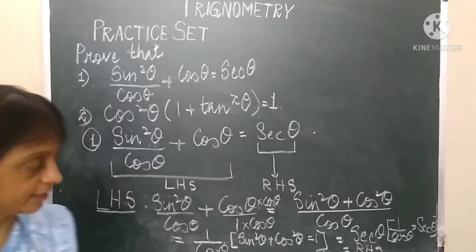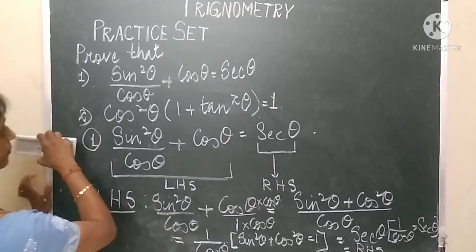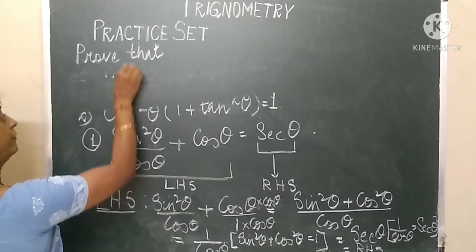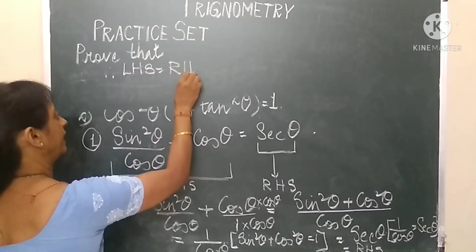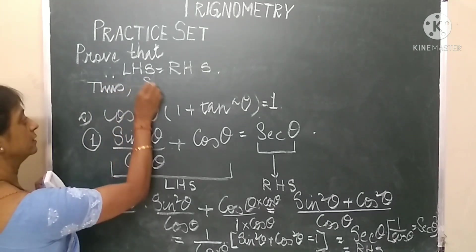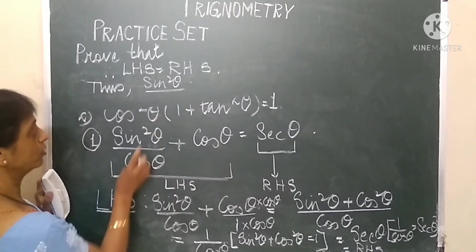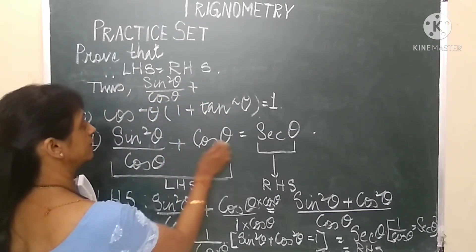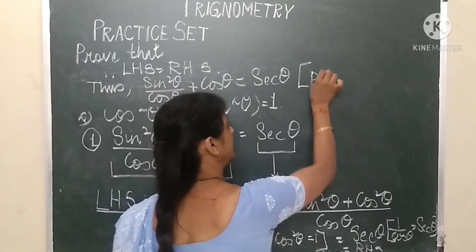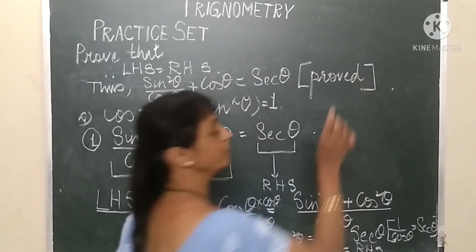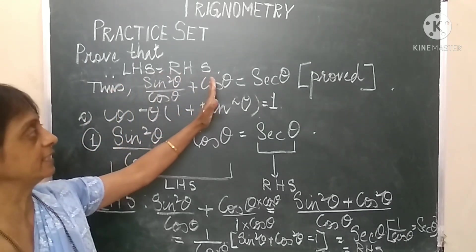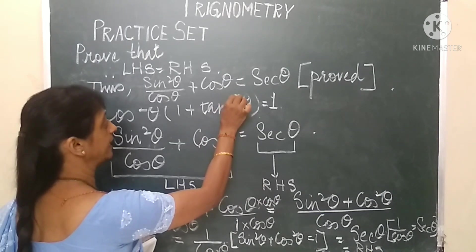Therefore, left hand side is equal to right hand side. Thus, sin²θ/cosθ + cosθ = secθ, and it is proved.